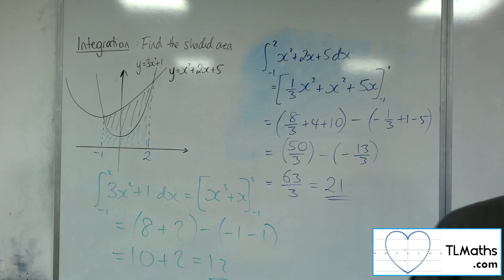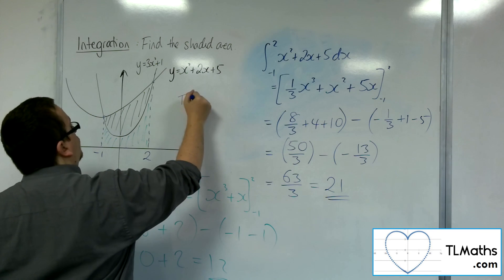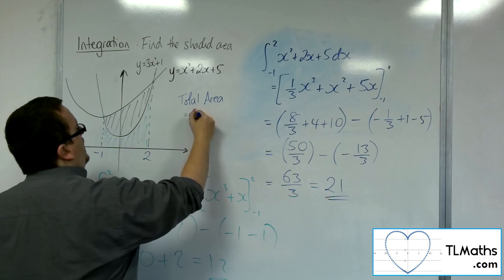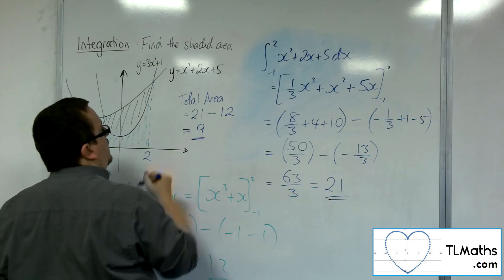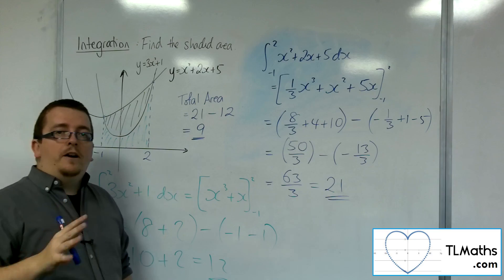And so the total area that was required was the 21, take away the 12, which is equal to 9. So the region that I wanted was actually 9 units.